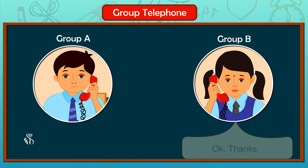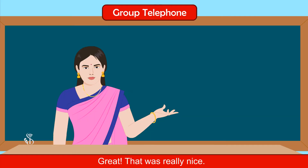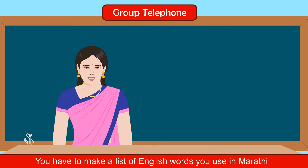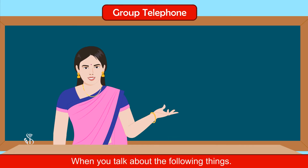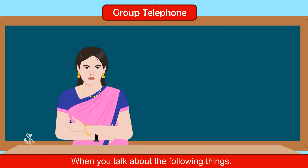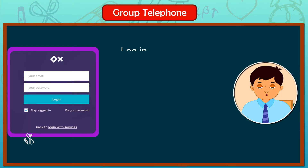After some time. Okay, thanks. Great, that was really nice. Now let's do another activity. You have to make a list of English words you use in Marathi, when you talk about the following things. A computer: login, log off, email, internet, Google Play Store, keyboard, mouse, screen, laptop, search, website.